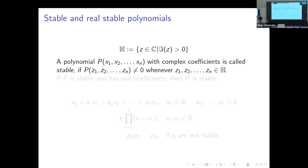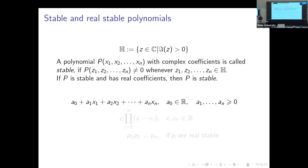A complex polynomial is called stable if it doesn't vanish when all variables are taken in the upper half plane. And if additionally it has real coefficients, it is called real stable. For example, a linear affine form is real stable if all coefficients in the variables are non-negative and the constant term may be arbitrary. If we consider the polynomial in one variable, it is real stable if and only if all roots are real.